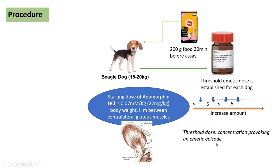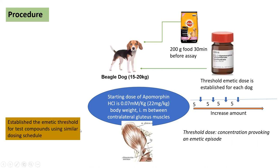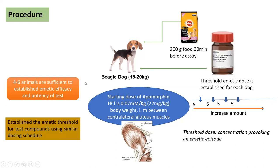The threshold emetic dose is the concentration of the drug which is showing the emetic episode. After establishing the threshold emetic dose, to screen a compound having emetic activity, administer the unknown compound following a similar dosing schedule and find out the threshold dose for the unknown compound which produces emetic activity — that will then be compared to the standard apomorphine. Overall, four to six animals are sufficient to establish the emetic efficacy and potency of the test compound.